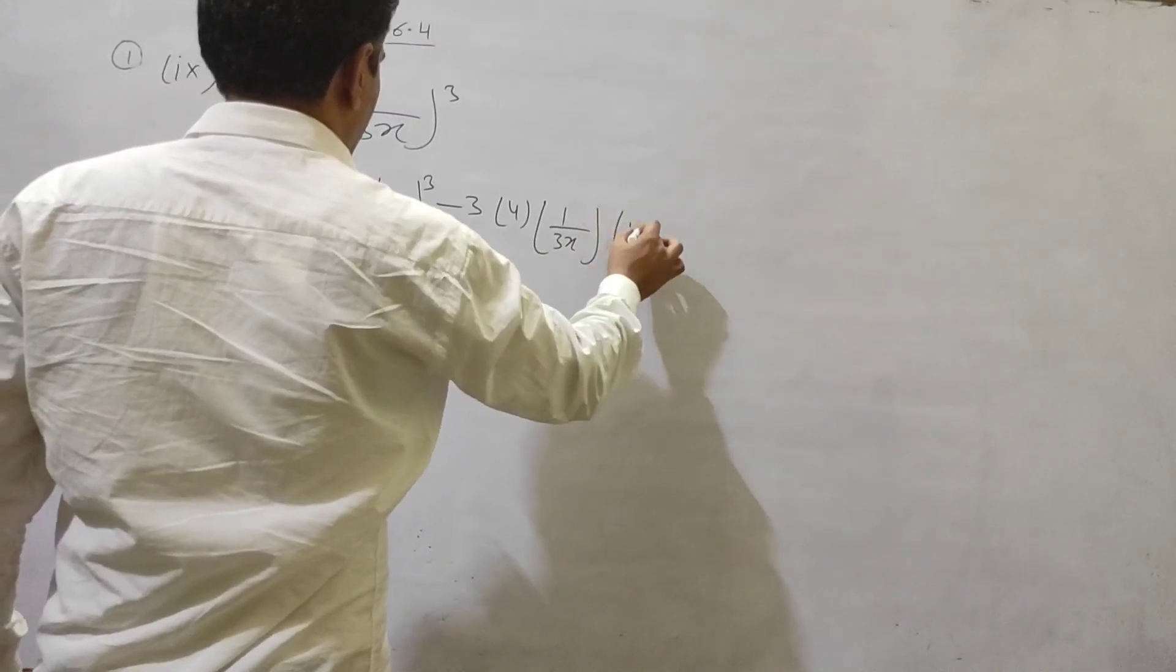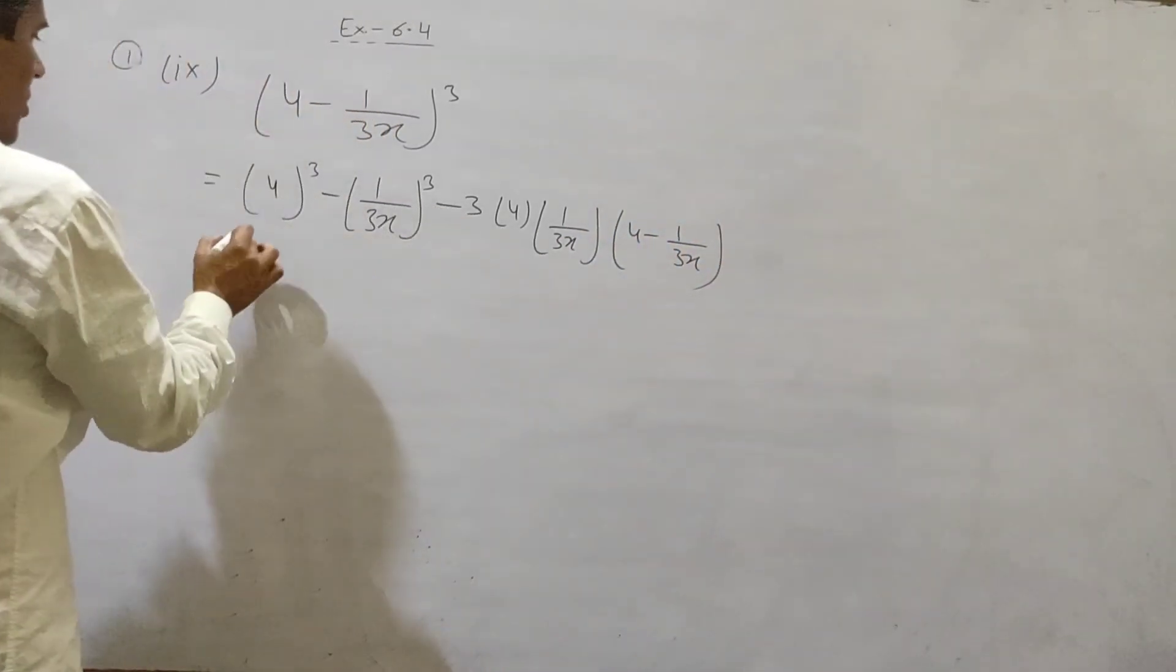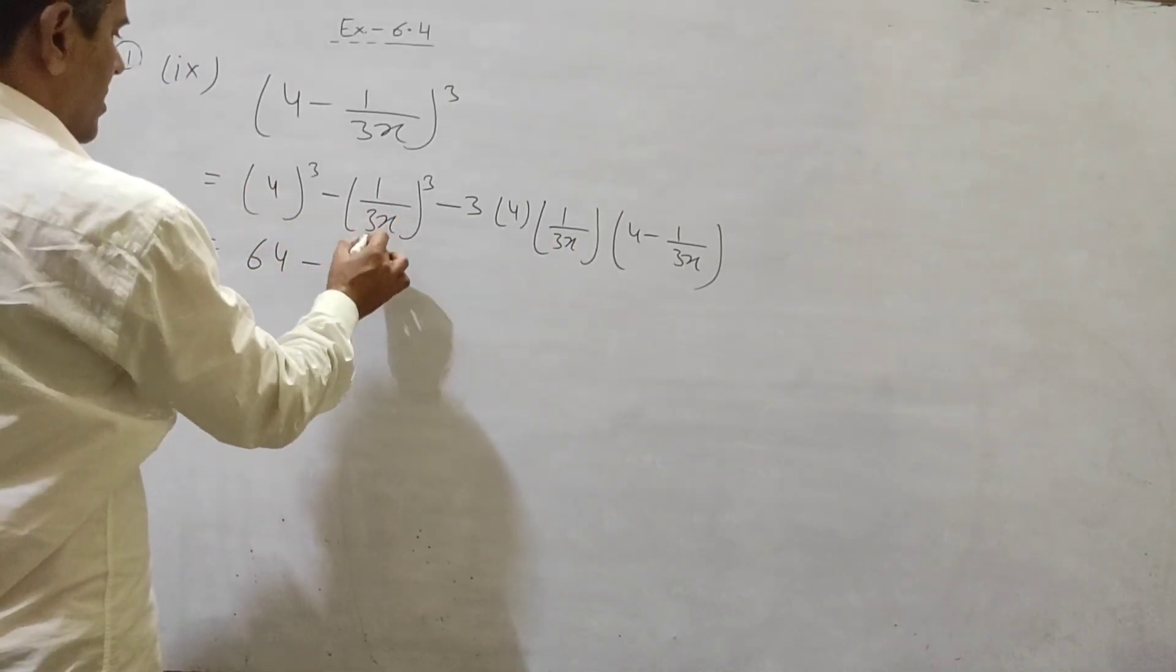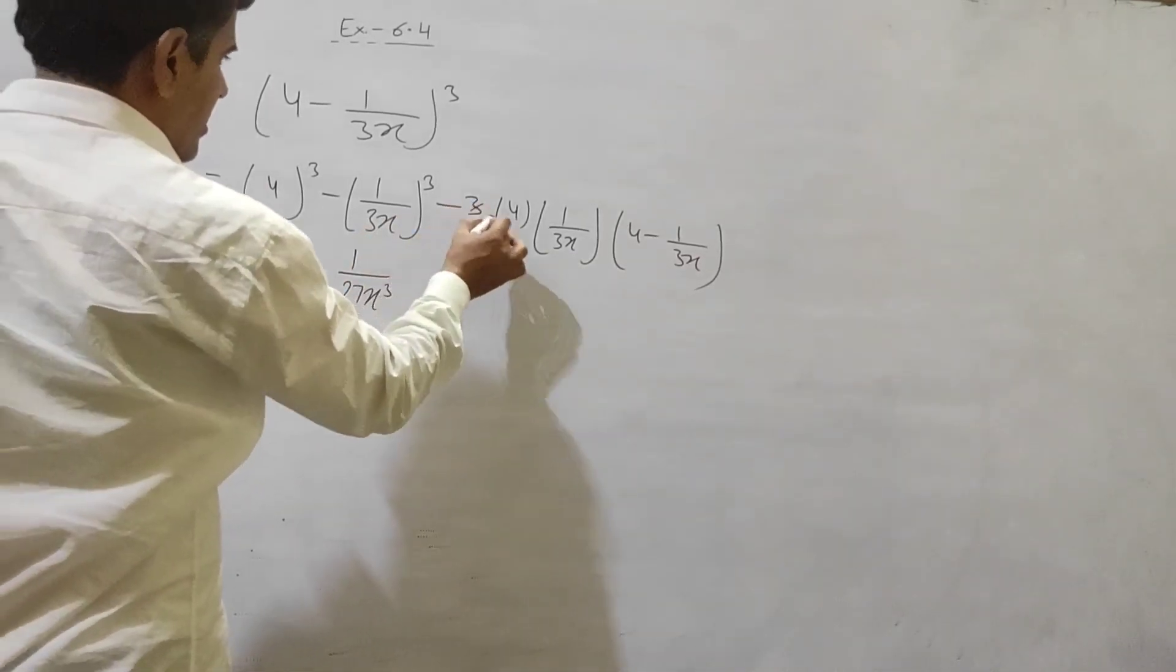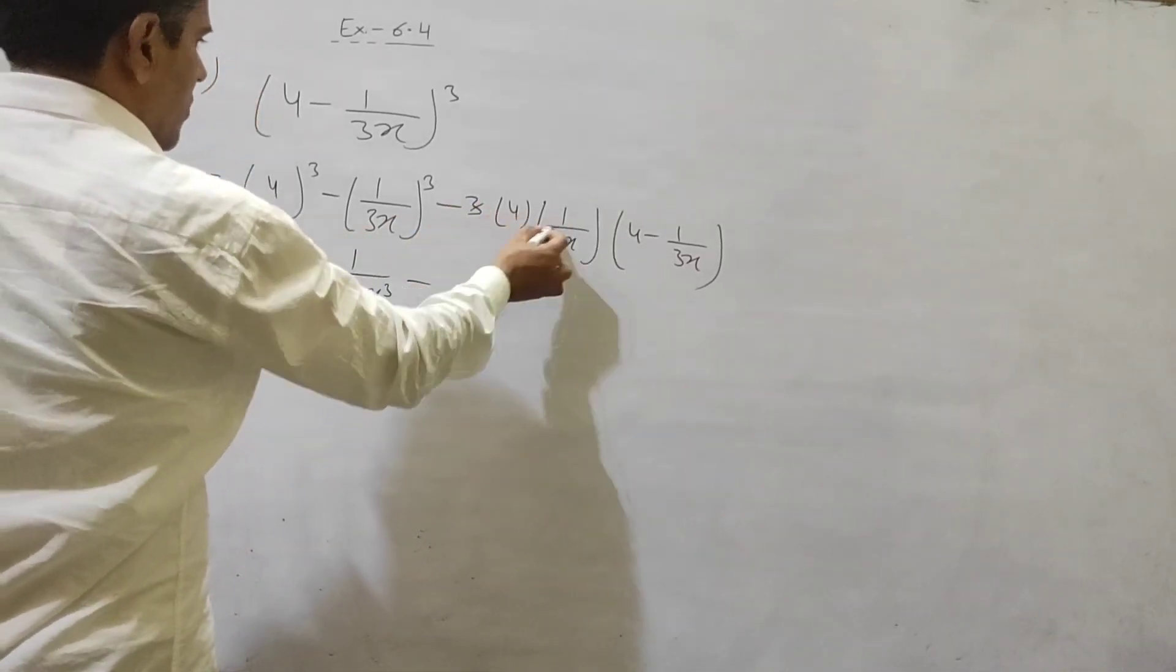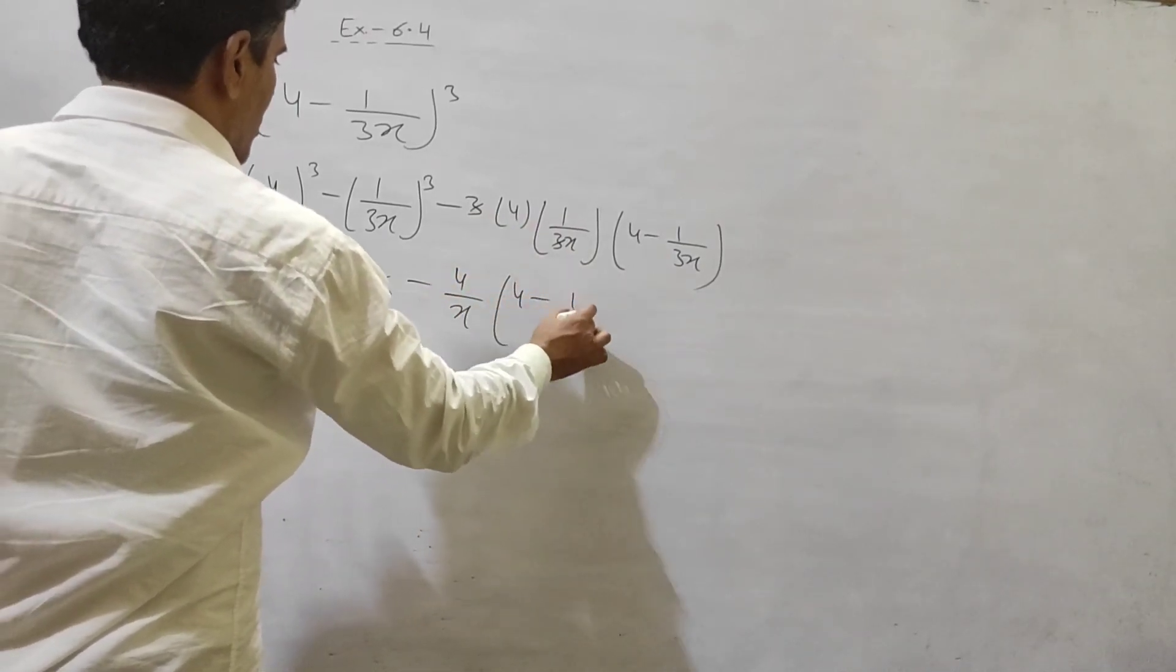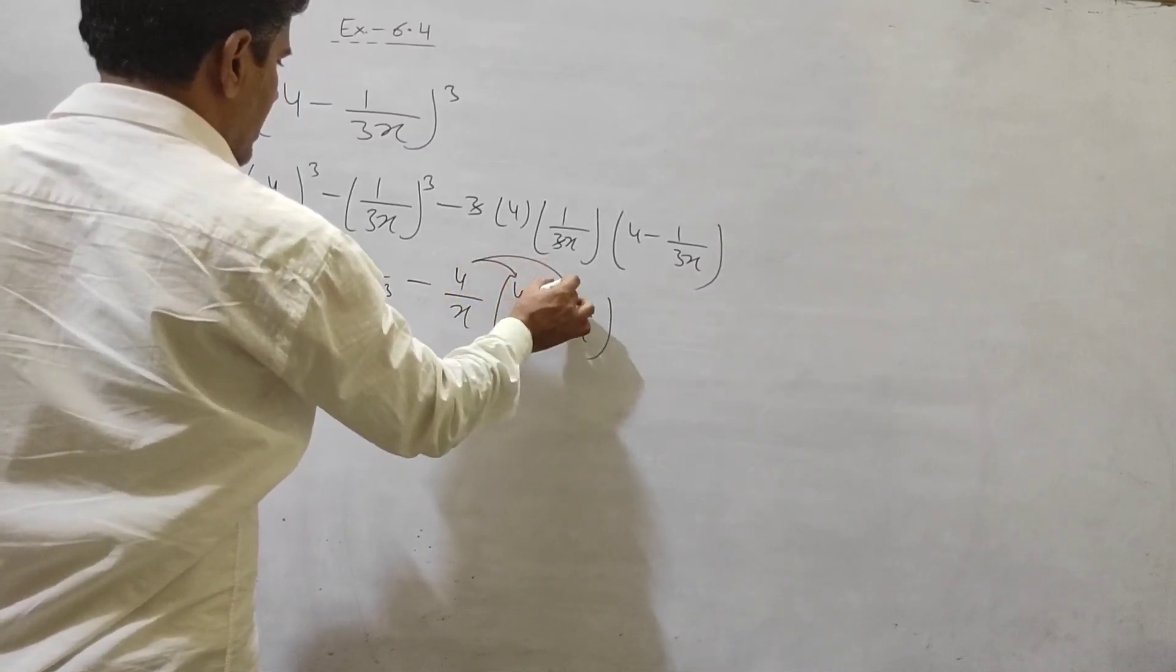Multiply with A minus B. Abhi, 4 cube. 4 multiply 4, multiply 4, 64. 1 cube 1, 3 cube 27, X cube. 3 say, 3 cancel out. 4 multiply 1, 4 by X. Multiply with 4 minus 1 by 3 X. First it say multiply again, then it say.